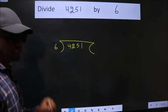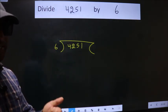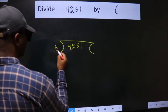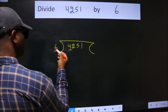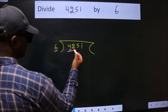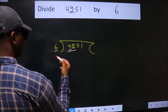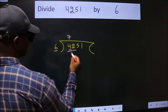This is your step 1. Next, here we have 4. Here 6. 4 is smaller than 6. So, we should take two numbers, 42. When do we get 42 in 6 table? 6 7s, 42.